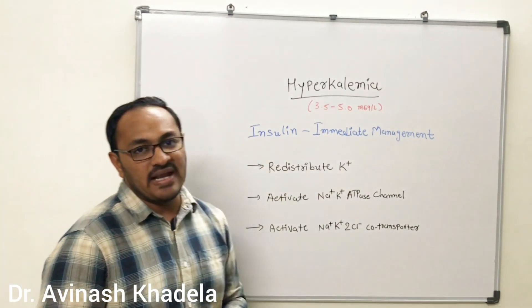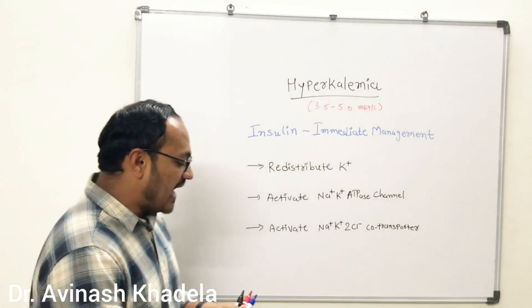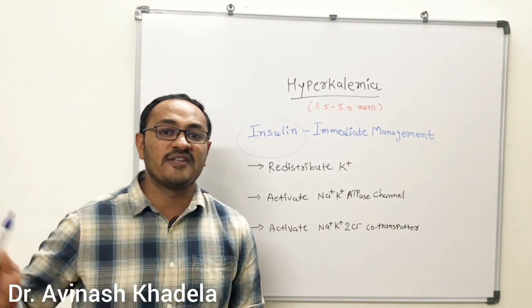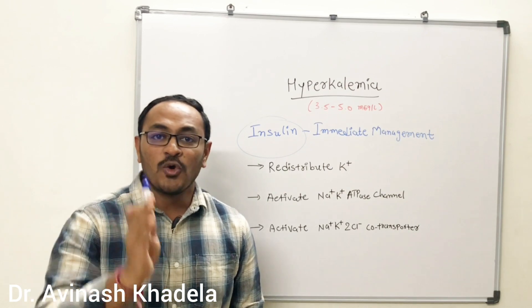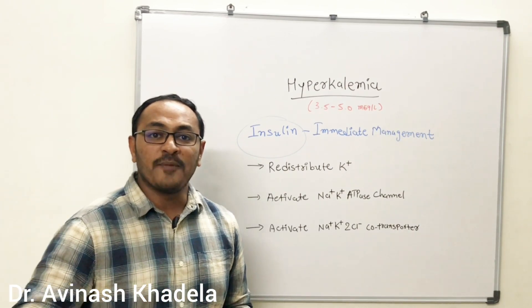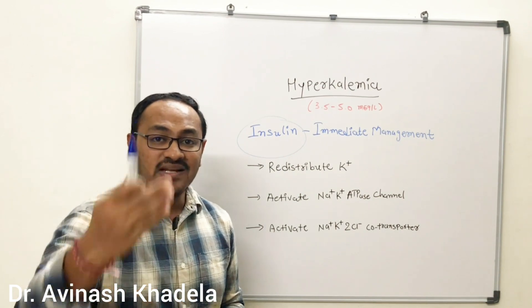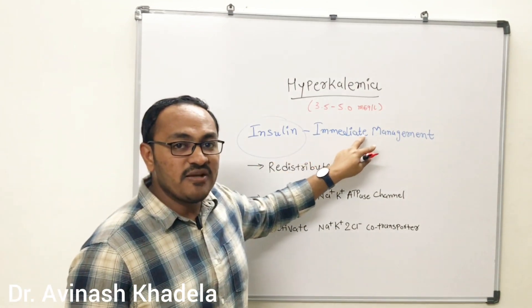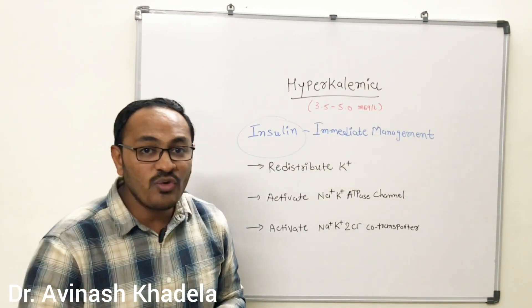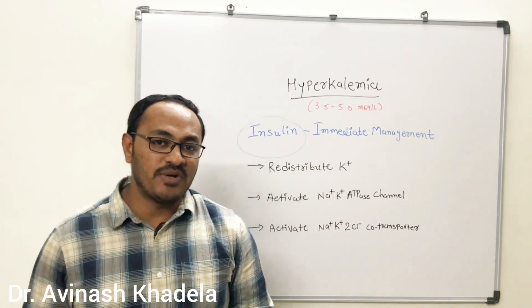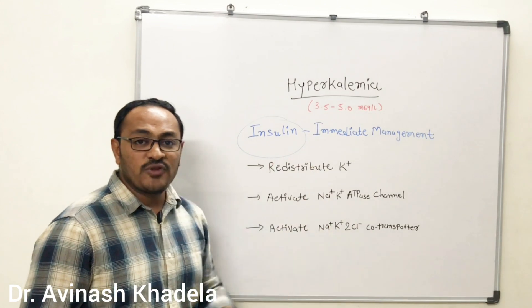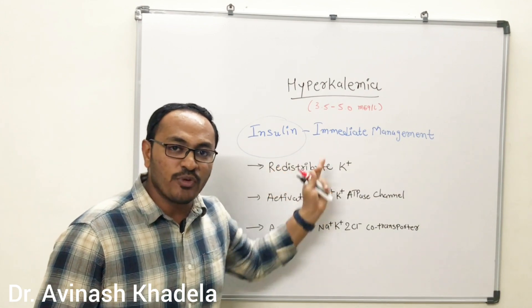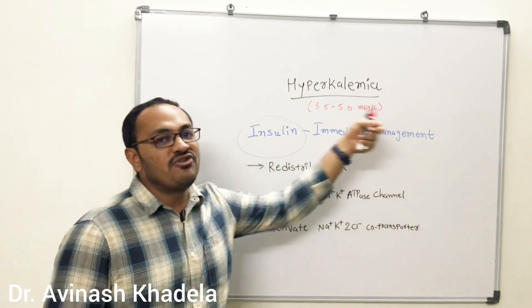Hyperkalemia is treated with the help of insulin. We know that insulin is used for the management of type 1 diabetes mellitus because of its glucose-lowering action — it promotes uptake of glucose by cells and decreases serum glucose concentration. But insulin is also used for the immediate management of hyperkalemia, where it will transiently redistribute potassium from the extracellular domain to the intracellular domain.